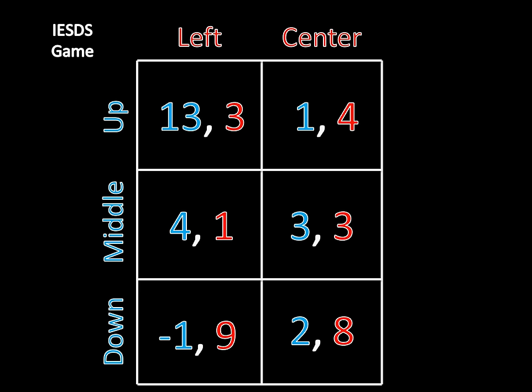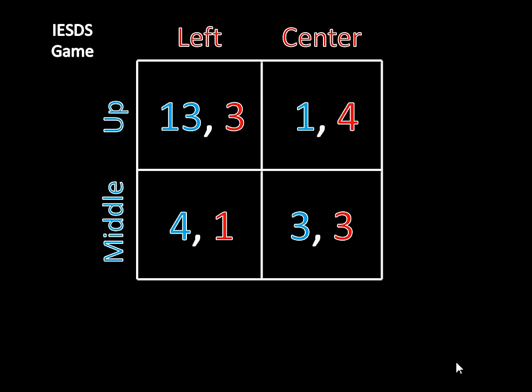Based on the fact that Player 2 is super intelligent and wouldn't play right, and Player 1 knows Player 2 wouldn't play right, that means he wouldn't want to play down. And then Player 2 can now infer that Player 1 would never play down, which means she can look at her strategies between left and center and decide that she would never want to play left. Why? If Player 1 were to play up, then center is better than left — 4 is greater than 3. And if Player 1 were to play middle, then center is better than left because 3 is greater than 1. So the left strategy is no longer sensible for Player 2. It's only center which is sensible for her — we know she's going to play center.